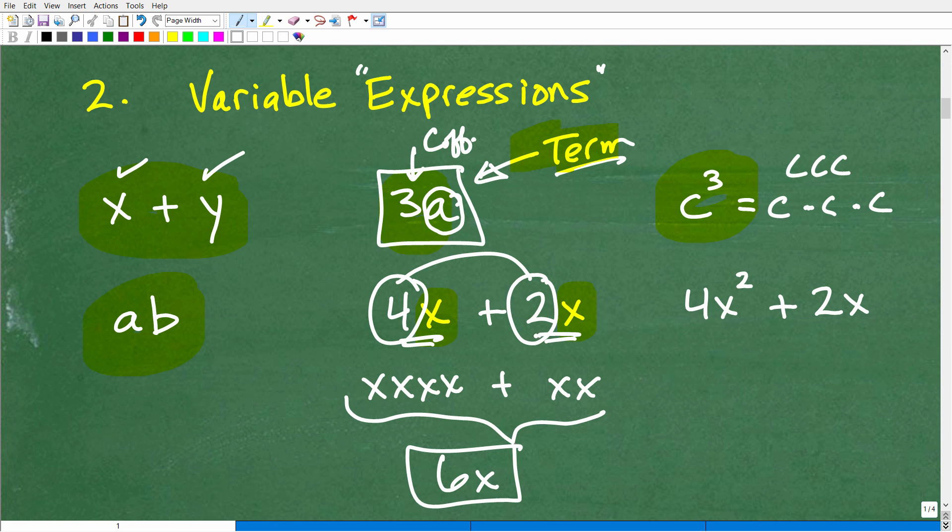So when you have 2 like terms, what you can do is simply add the coefficients, right? So 4 plus 2 is going to be 6, or this would be equal to 6x. So again, we can combine, add or subtract, like terms. So when you're looking at terms, you want to look to see if they are like.